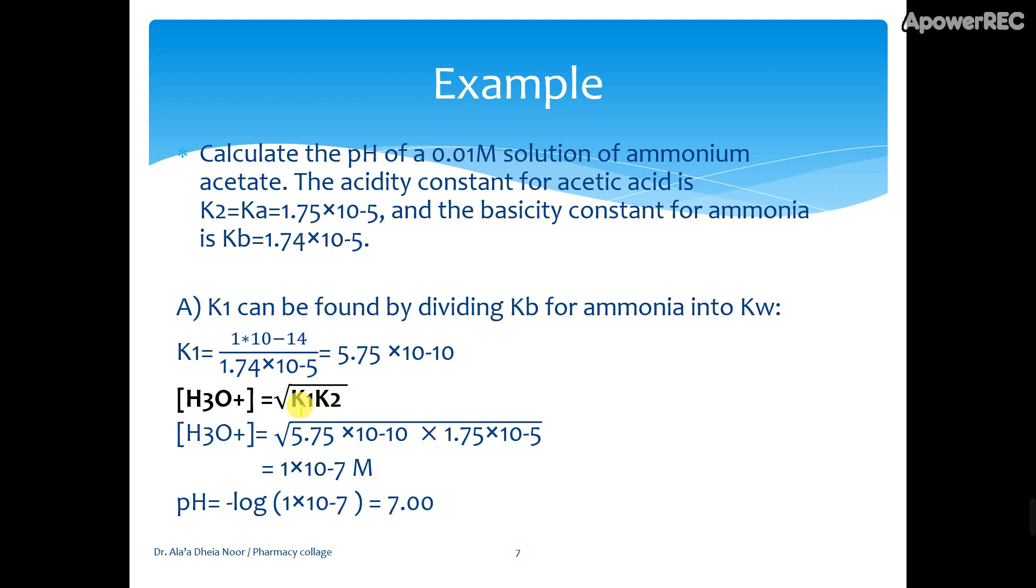We have ammonia which is a base. What is the conjugate acid of ammonia? We get it from Kw divided by Kb. We have the relationship that Kw equals Ka times Kb. So Ka equals Kw divided by Kb. This Ka is the acidity constant, the constant of the conjugate acid of the weak base.